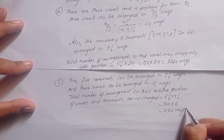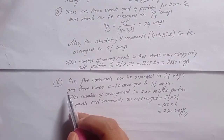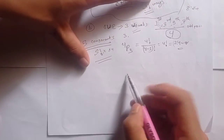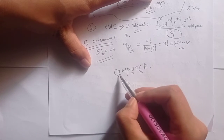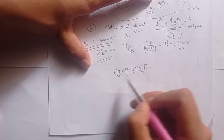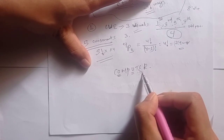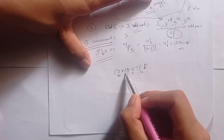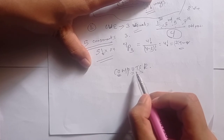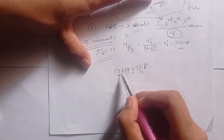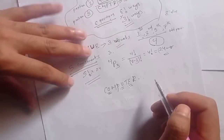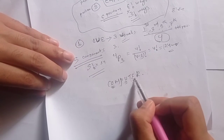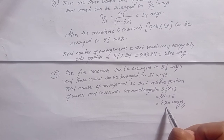Therefore, the total number of arrangements such that the relative positions of vowels and consonants are not changed is equal to 5 factorial times 3 factorial, which is 120 times 6, equal to 720 ways.